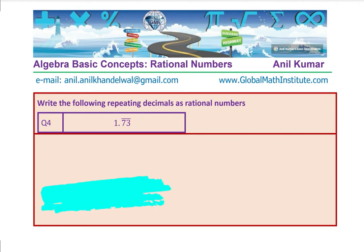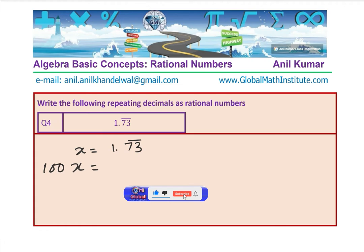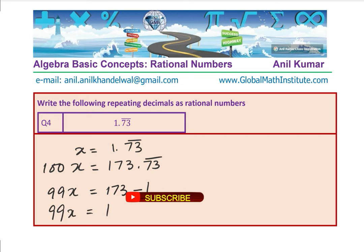That brings us to the last question. I just made a minor change here to give you the complete variety of questions. This time, we have x equals 1.73 repeating. How will you write this as a rational number? Because 73 is being repeated, I should multiply by 100. We follow the same strategy: 100x equals 173.7373 repeating. Subtracting, we will get 99x equals 173 minus 1. Because of this 1, we get 99x equals 172. In this case, the solution is x equals 172 over 99.